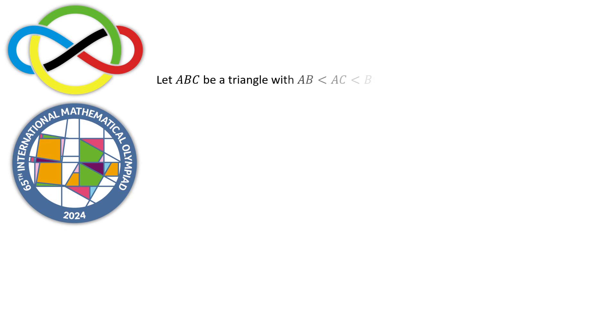Let ABC be a triangle with AB less than AC less than BC. Let the incenter and incircle of triangle ABC be I and omega, respectively.